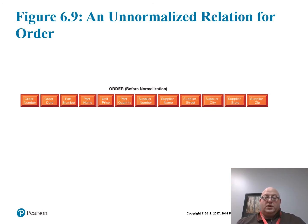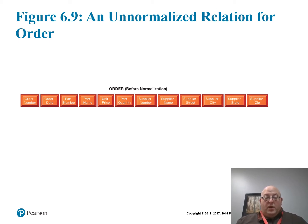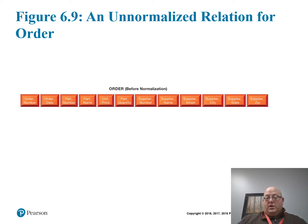This is a normalized relation for the order table. Order date depends on order number; part name depends on part number. This unnormalized table won't get it done — we really need more tables to generate relationships better. We could have a table for orders with order number and order date, a table for parts with part number, part name, unit price, and part quantity, and another for supplier with all supplier attributes. Then we can build relationships, set our foreign keys and primary keys.